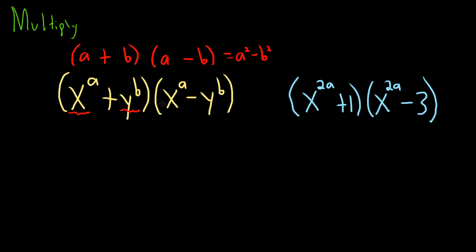I know I use the same letters, it's a little confusing, but hopefully it makes sense. So we take x to the a and we square it. Minus, and then we take y to the b and we square it.